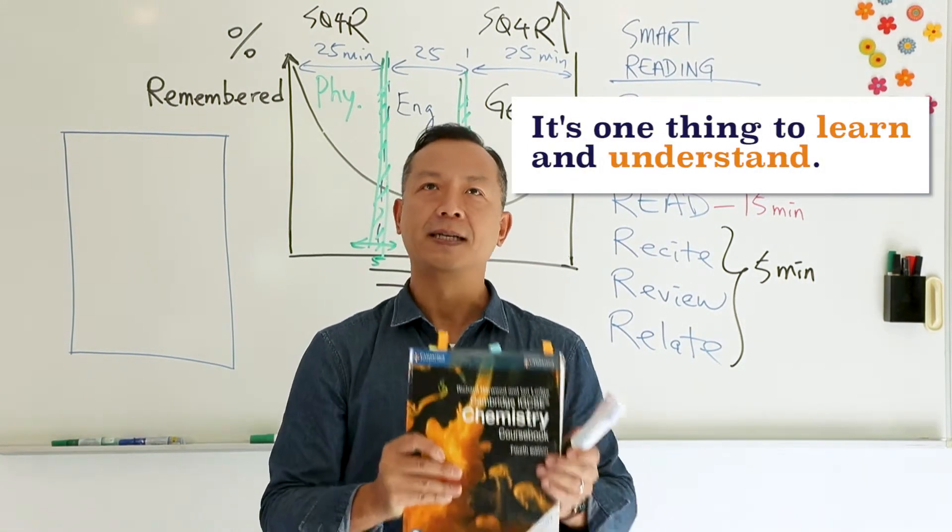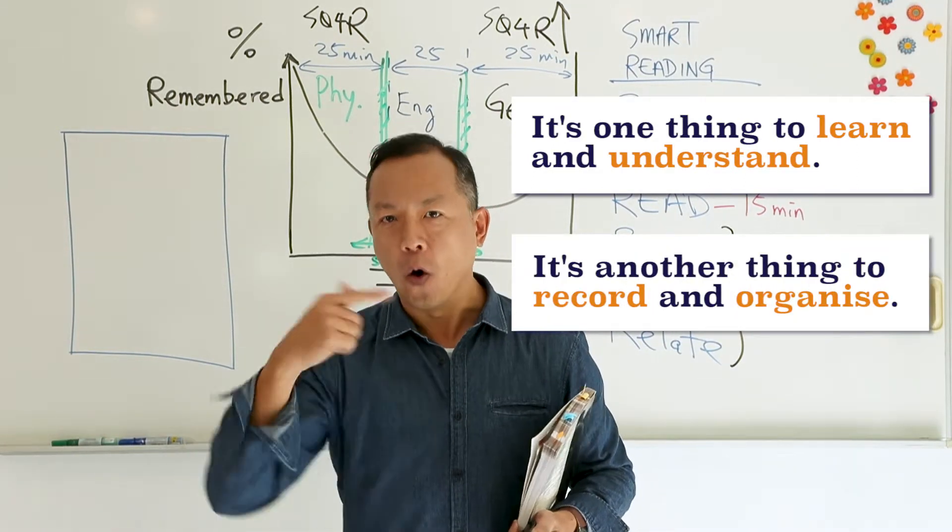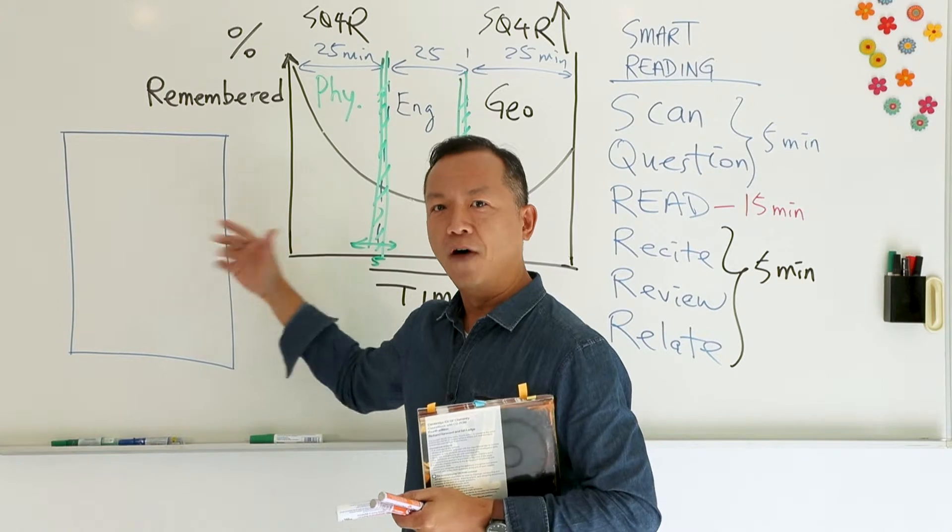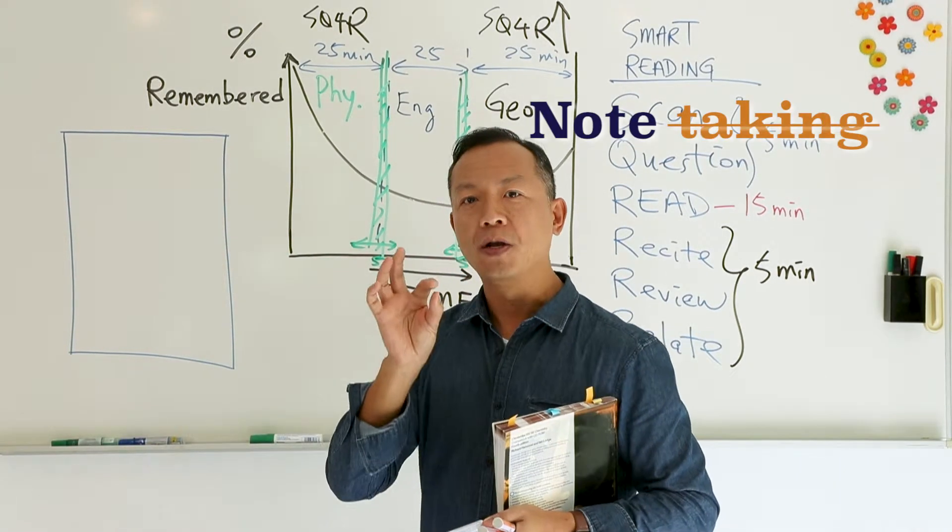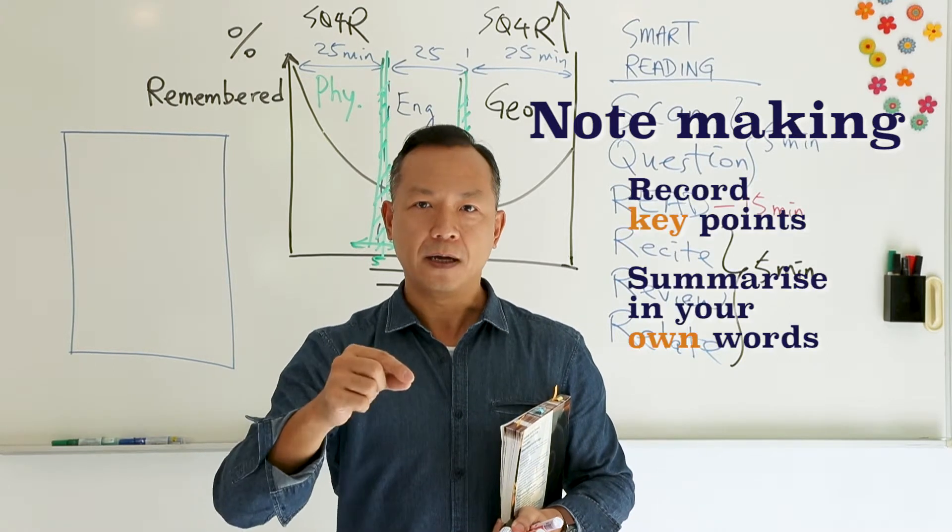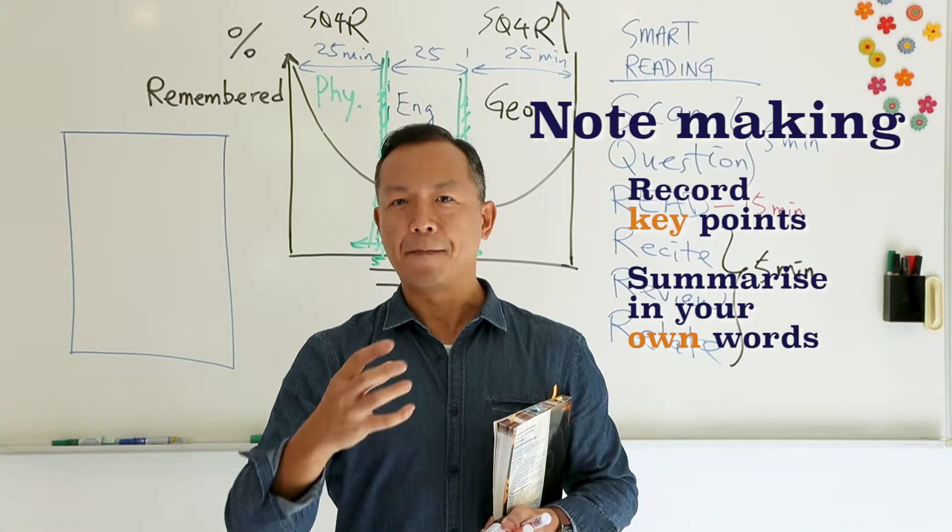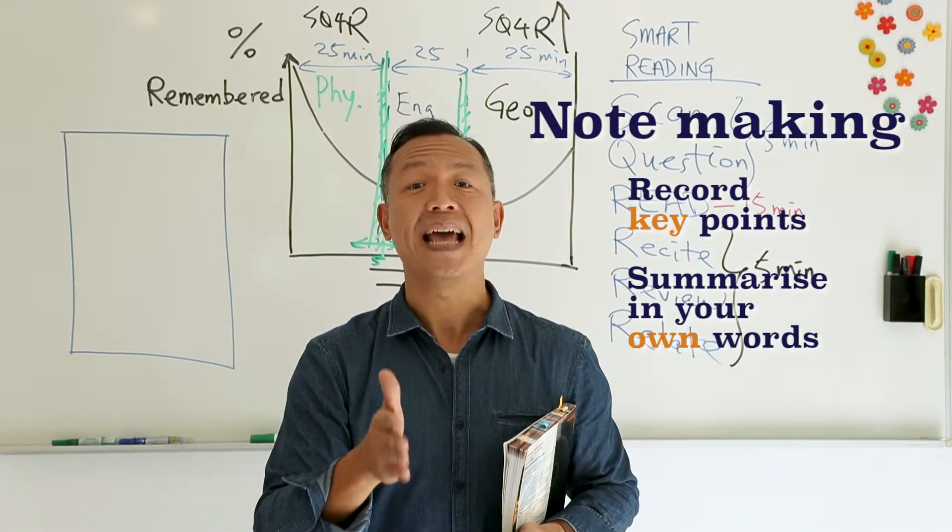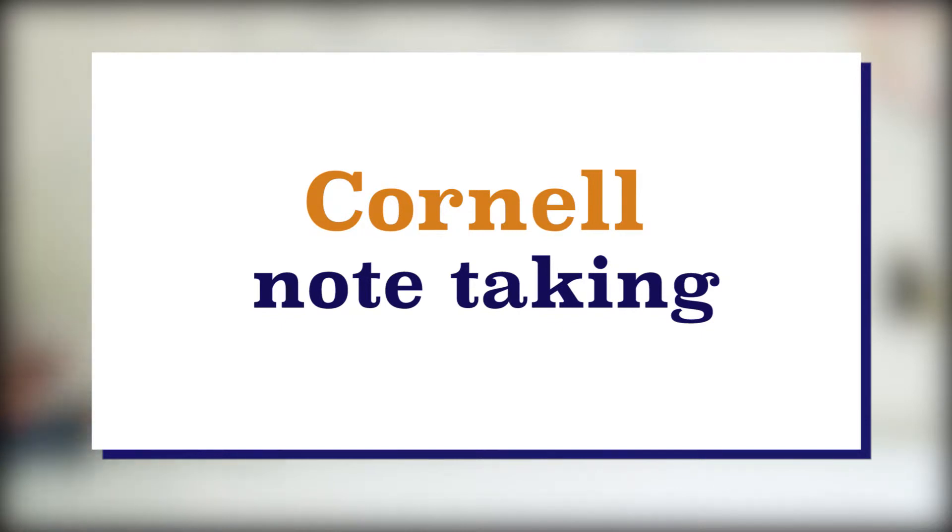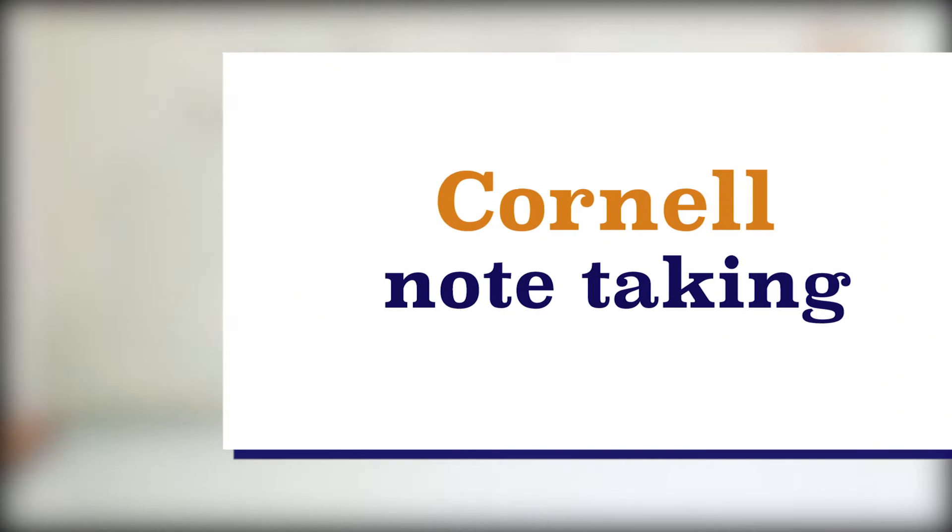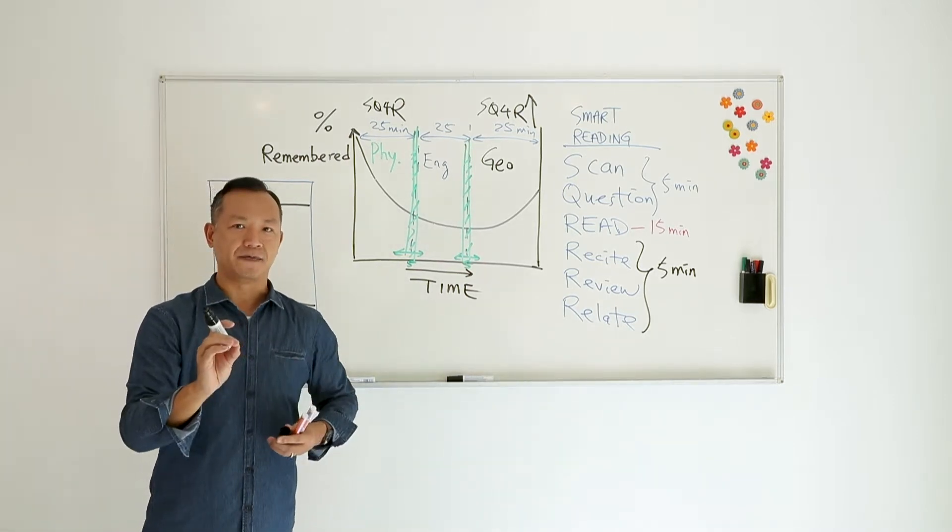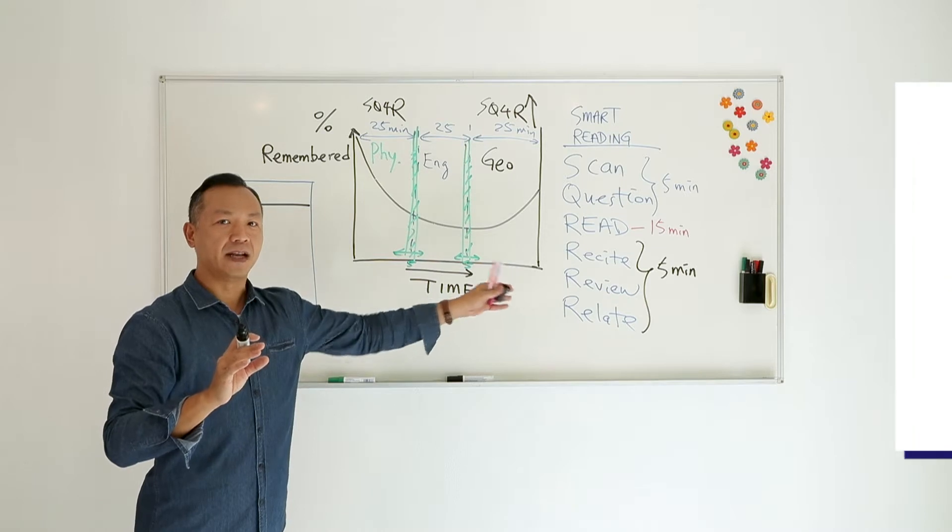It's one thing to learn and to understand. It's another thing to record and organize what you have learned. Therefore, let me now introduce to you the twin system of reading - note-taking, or what we call note-making. Top students don't just record everything down. Top students, they record the key points. They summarize, they paraphrase what the teacher talks about in their own words. So I want to show you a template.